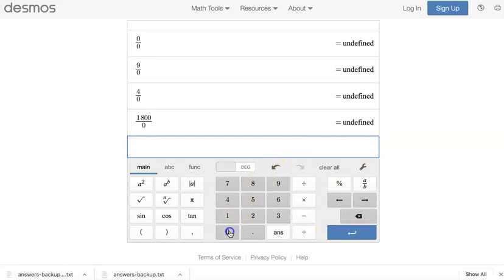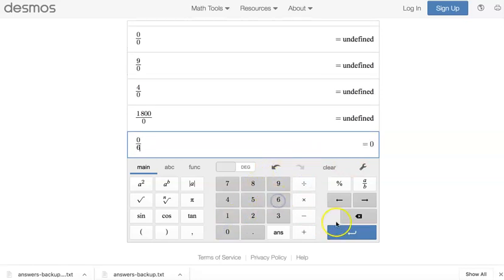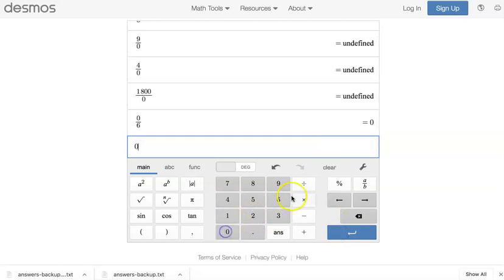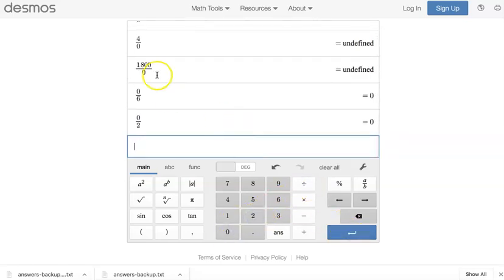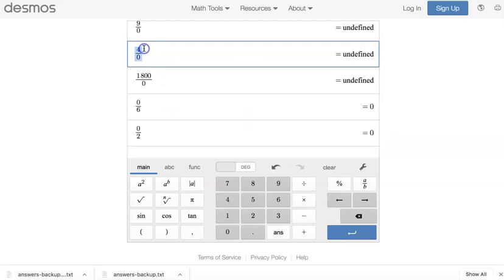Now, it's okay if 0 is in the numerator. If you do 0 divided by 6, that will be 0. 0 divided by 2, that's okay. But whenever you have 0 in the denominator, that's a problem.